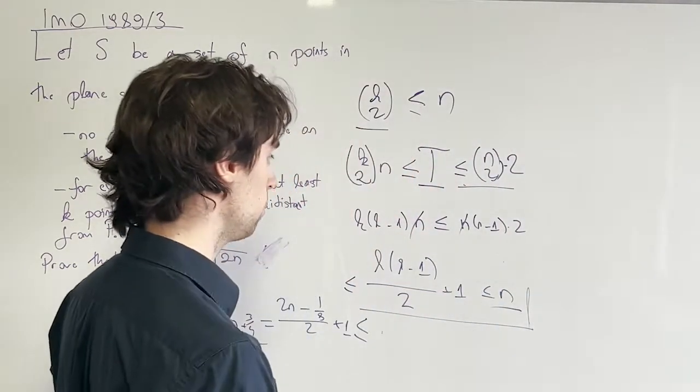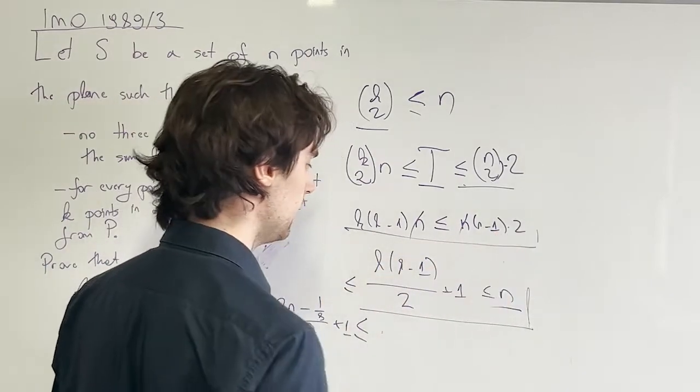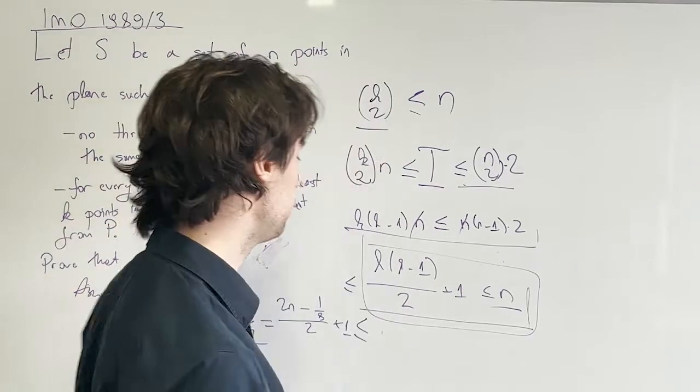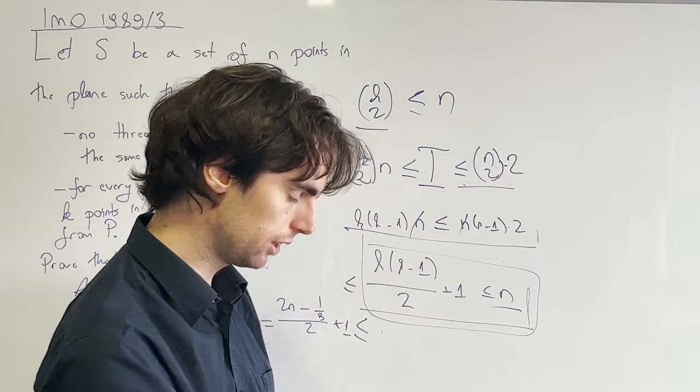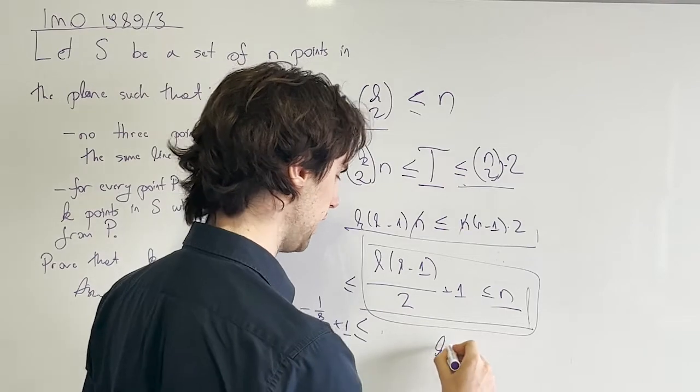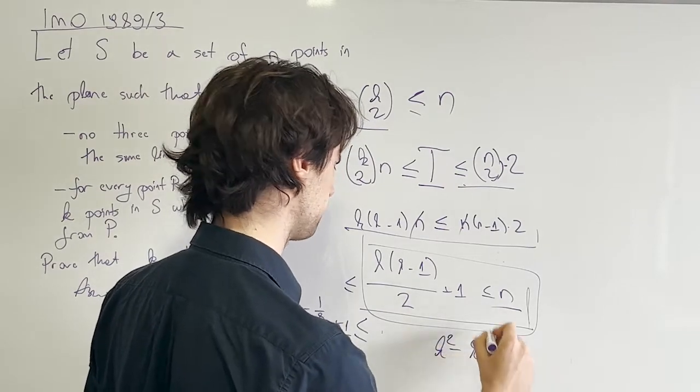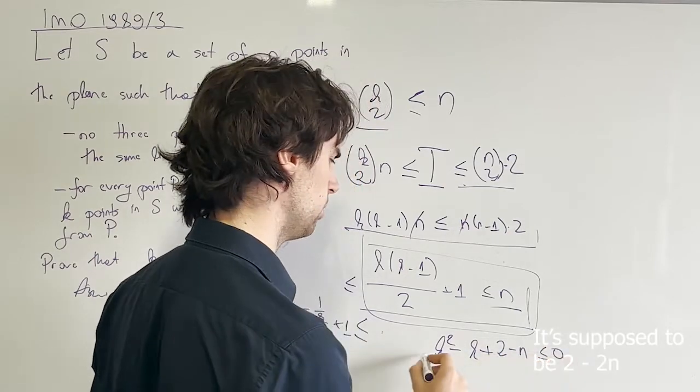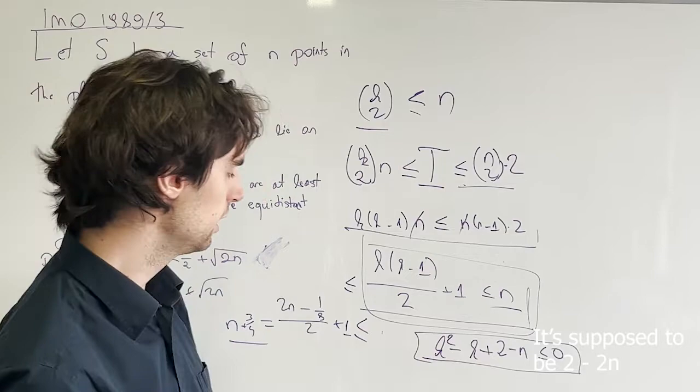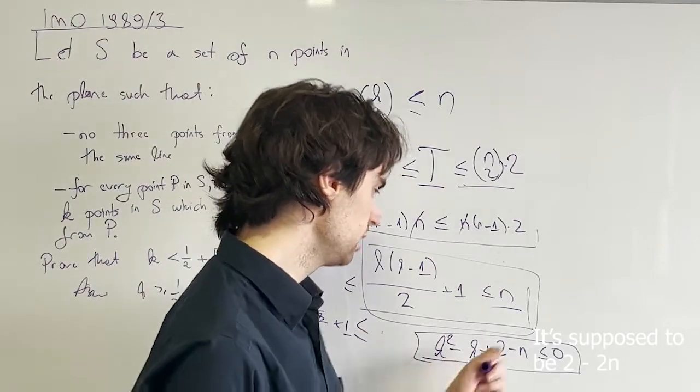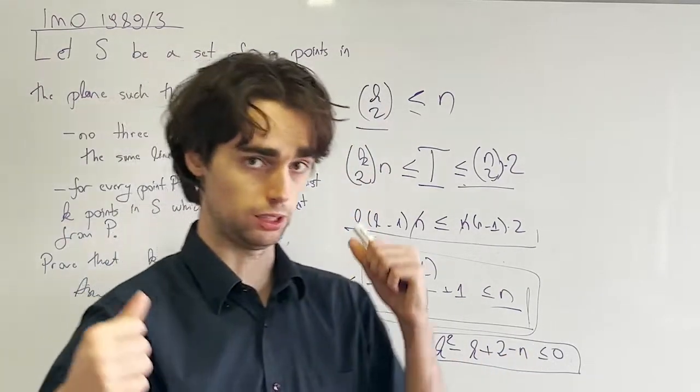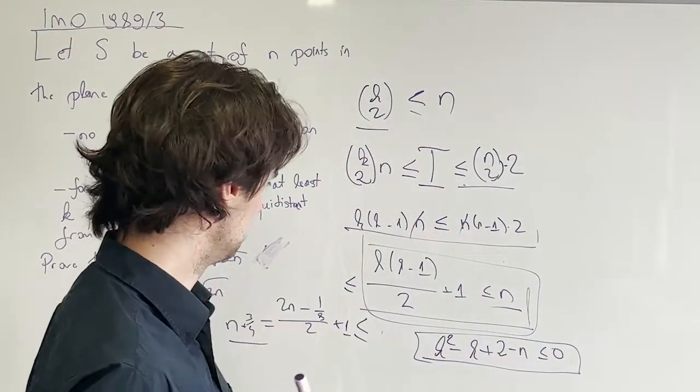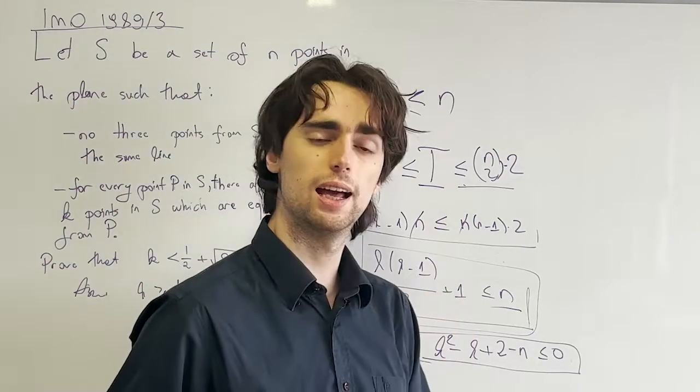Alternatively, we could have also solved this problem right here, this inequality. We could have looked at this as a quadratic equation in k and figured out, this quadratic equation is like k squared minus k plus 2 minus n less than or equal to zero. And then what does this mean if this is true for k? What does k need to be? Well, it needs to be between the two zeros. What does that give us? And that can give us this estimate, I believe. And this solves our problem.